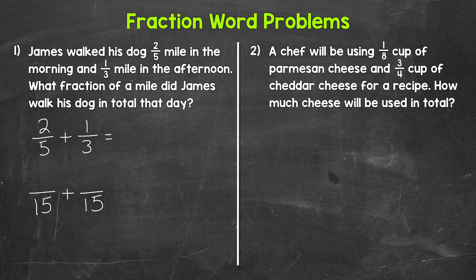Let's start by renaming two-fifths. We know that five times three gives us that denominator of 15. Whatever we do to the denominator, we must do to the numerator in order to keep this equivalent. So we need to do two times three. Two times three gives us six — that's our numerator. Six-fifteenths is our renamed fraction with the denominator of 15.